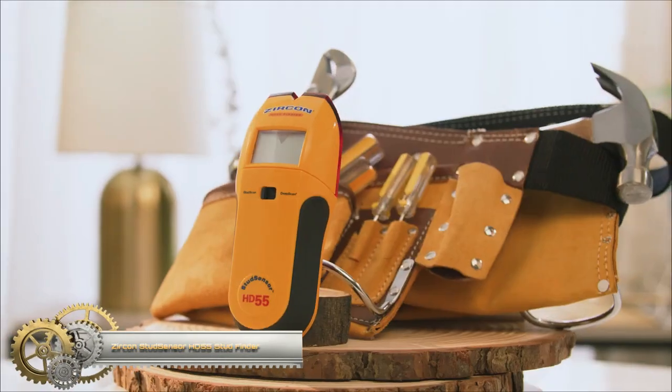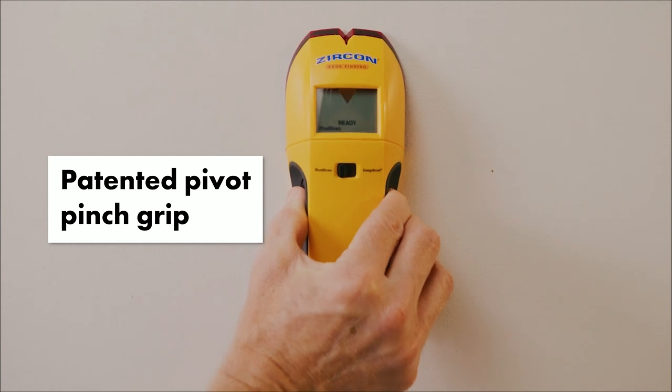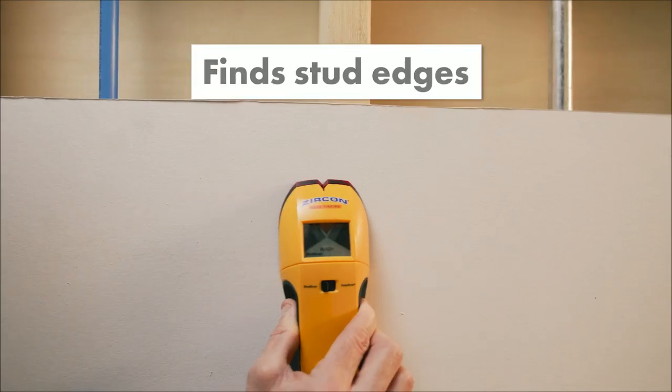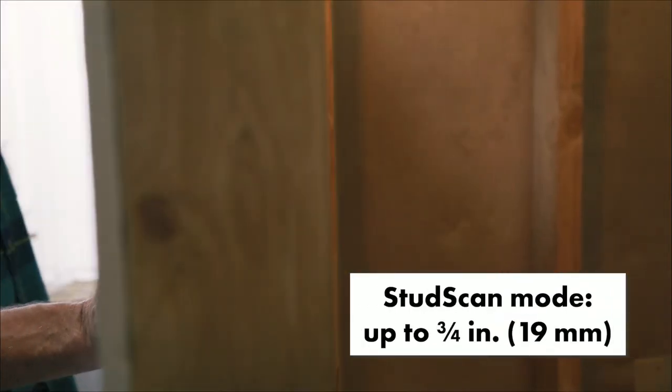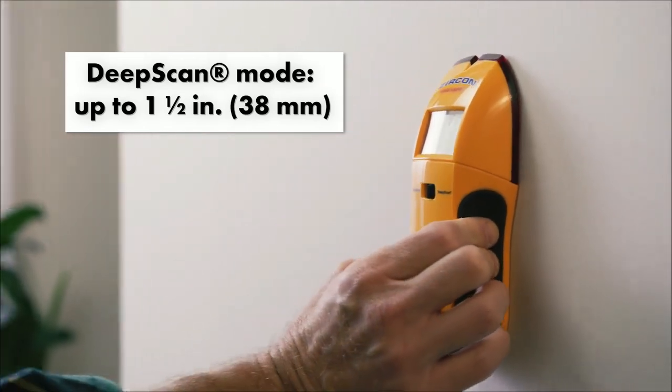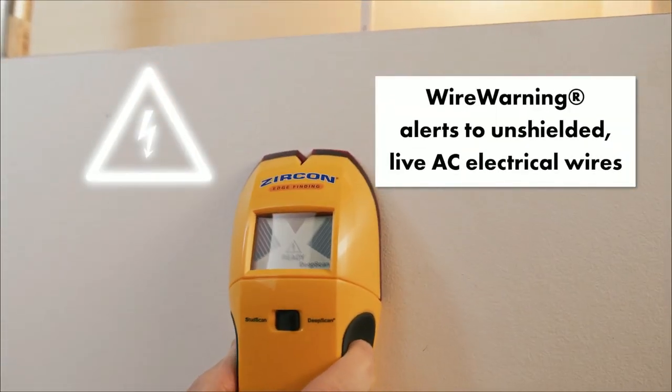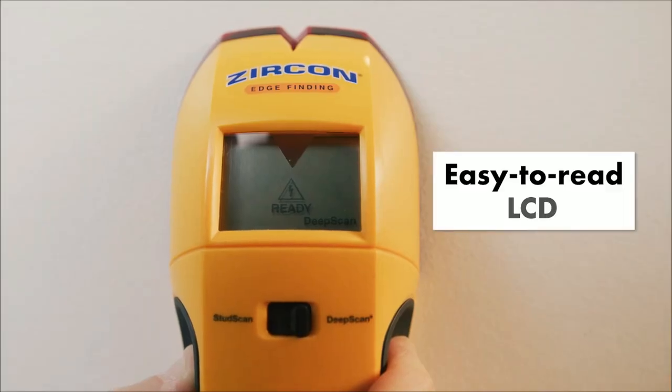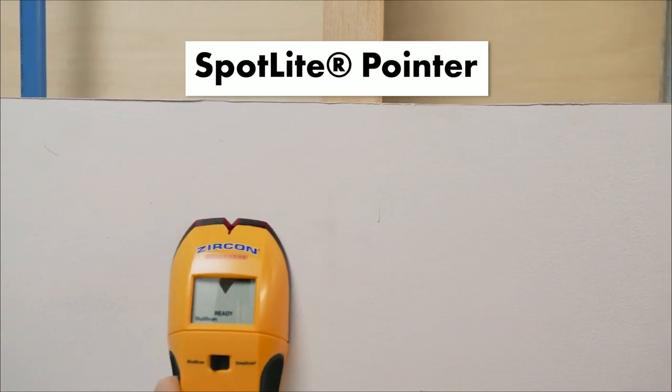Zircon Stud Sensor HD55 Stud Finder features an enhanced TEL-CD display with target spotlight that illuminates onscreen when you've found the edge of a stud. Select from two studs scan modes to find the edges of wood and metal studs to securely anchor mirrors, shelves, and cabinets to the wall while also avoiding live AC electrical wiring.